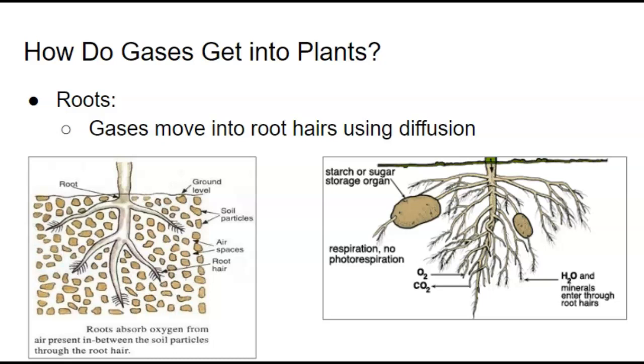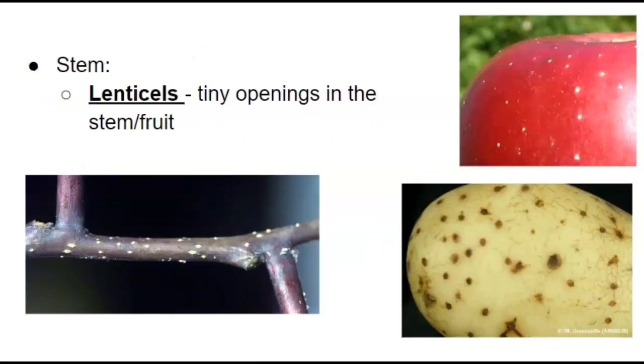So that's roots. Let's talk about stems now. So in our stems, we have little openings. Leaves, we talked about stomata, we haven't gotten there yet. But in our stems, we have little openings and they're called lenticels. If you take a look at a branch, next time you look at a branch, you'll see these little white spots. Sometimes they're white, sometimes they're a different color. Those are little openings to let gases in and out. Because remember, stems, they need energy too, so they're going to need oxygen as well.